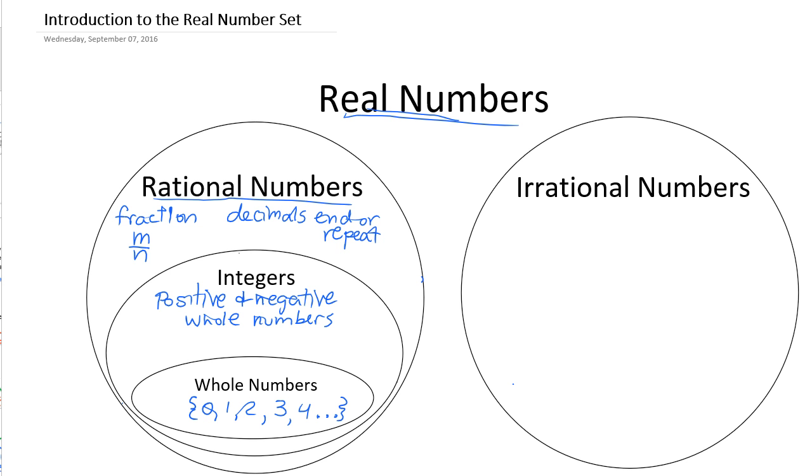As we look at the big circle here of rational numbers, all of these, the integers are a more specific kind of rational number, and whole numbers are a more specific kind of integer. So really, it's like a subset, a smaller part of the bigger set of rational numbers.